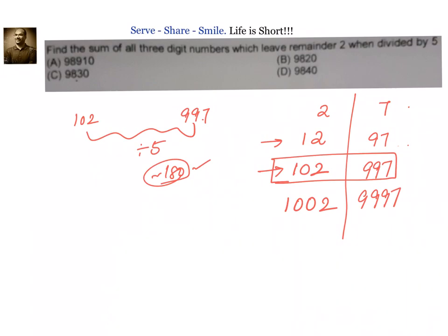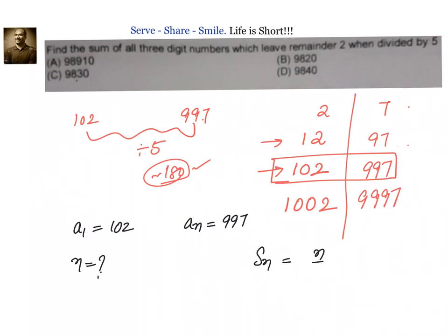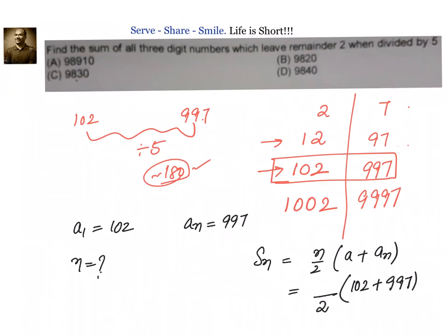Now let us solve this problem using the descriptive method with formulas. We know a₁ equals 102, and aₙ equals 997. We need to first find how many values there are, n, and then find Sₙ. The formula for Sₙ is n/2 times (a + l), or (a + aₙ). Once we know n, we substitute a equals 102 and aₙ equals 997 into this formula.